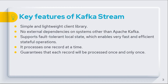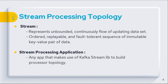Kafka Streams guarantees that each record will be processed once and only once, even if there is a failure in the middle of processing either on the stream clients or Kafka brokers. What is stream processing topology? It is nothing but a graph of nodes connected by edges, where nodes are represented by processors and edges are represented by streams. In simple words, it's a graphical representation of the stream processing flow in your application.